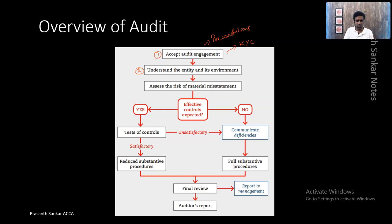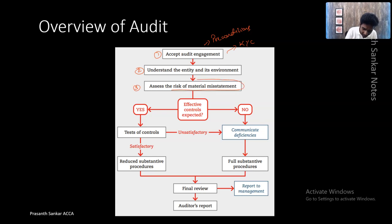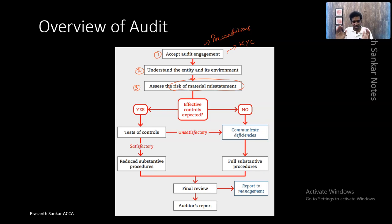Once the client is accepted and a contract is entered into, the second step is to understand the entity and its environment in detail - what do they do, their day-to-day practices, who are their management and directors, what are their daily financial transactions, their internal controls, and which ERP system they follow. The third step is to look at the risk of material misstatement.